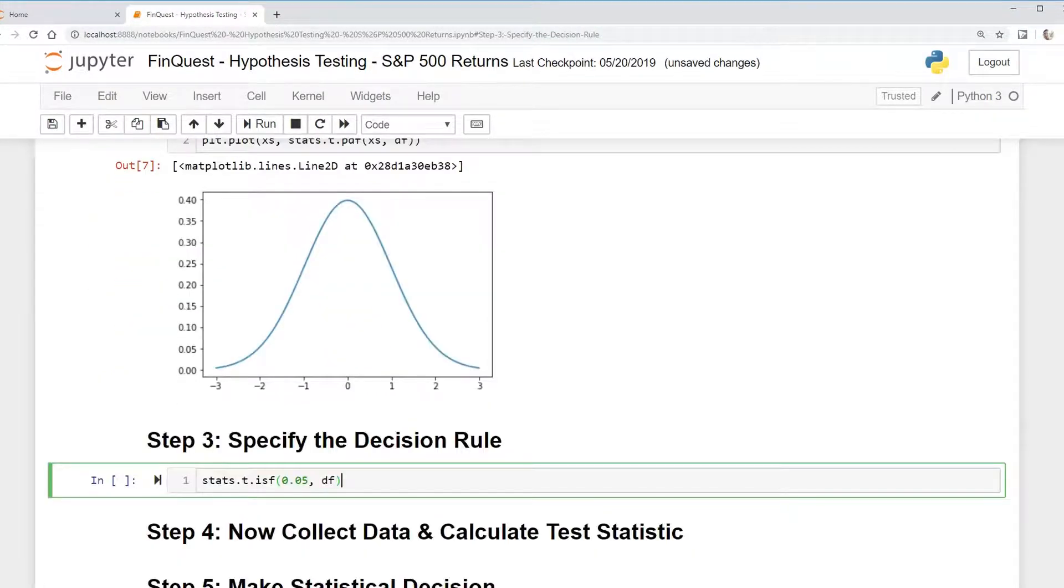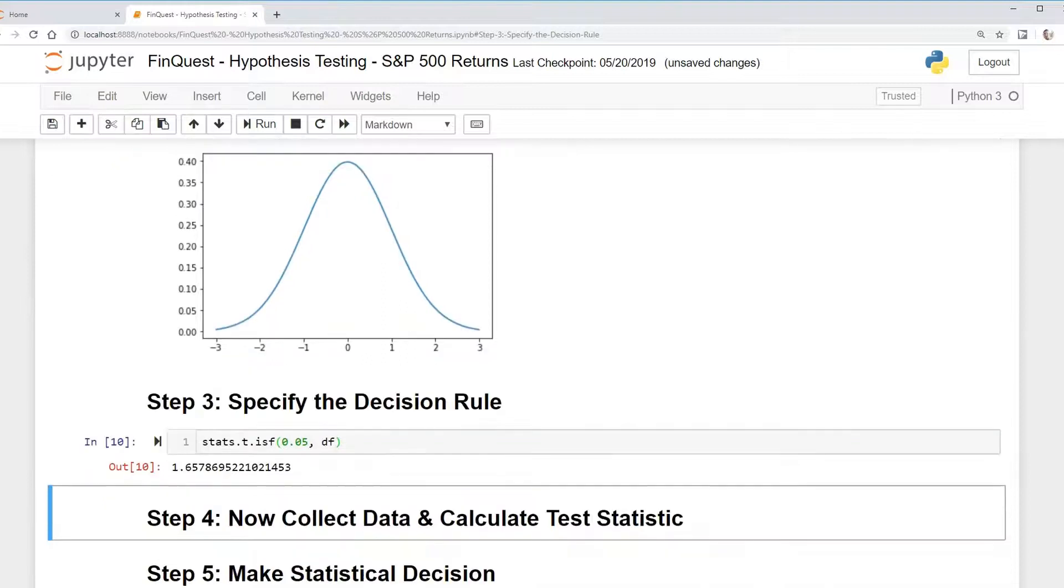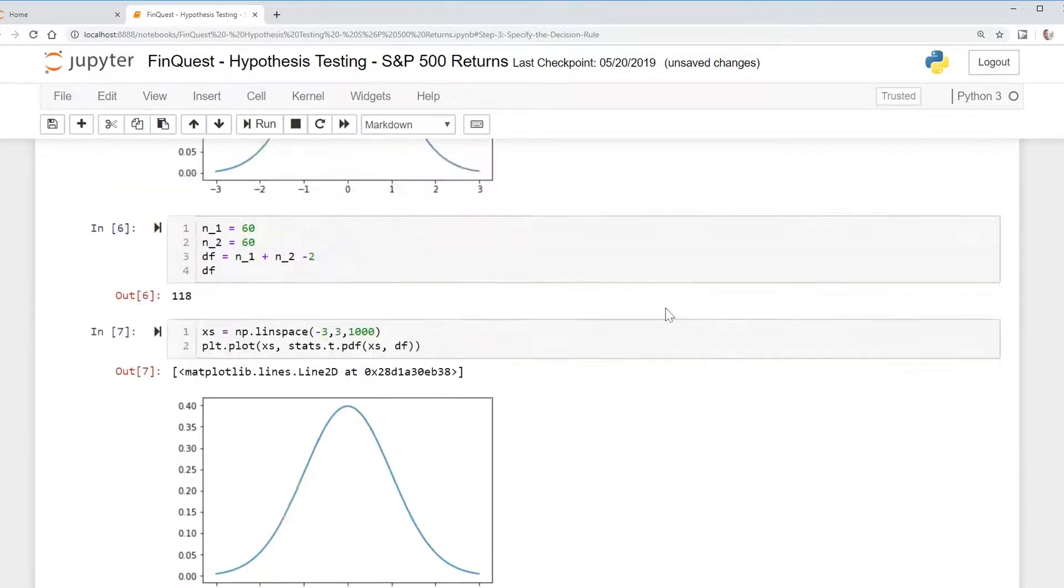So let's say df like so and run that. But remember now this is 95% of the values to the left of the distribution. We want actually to have the rejection points on both sides of the distribution because this is a two-tailed test.